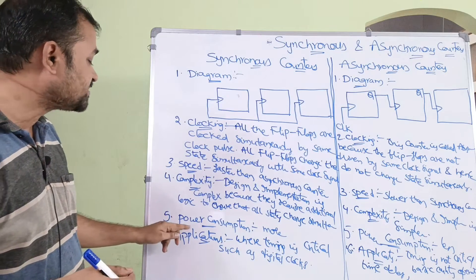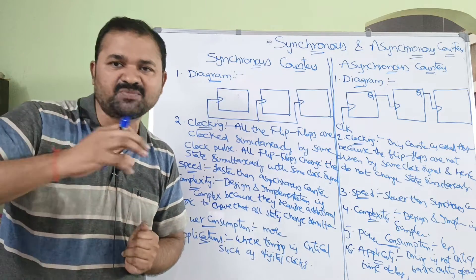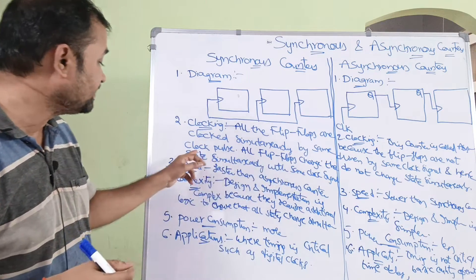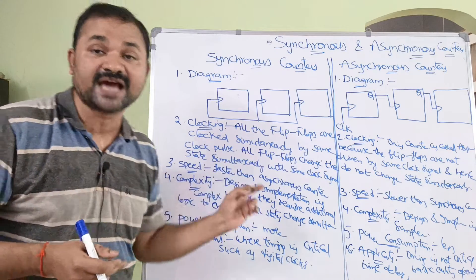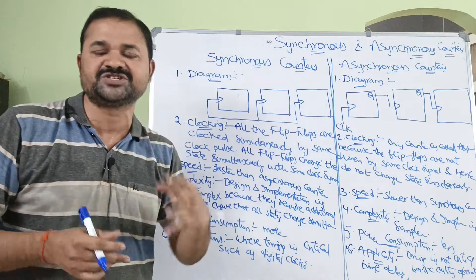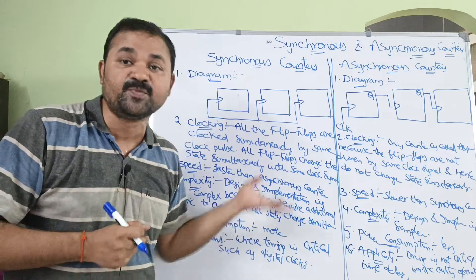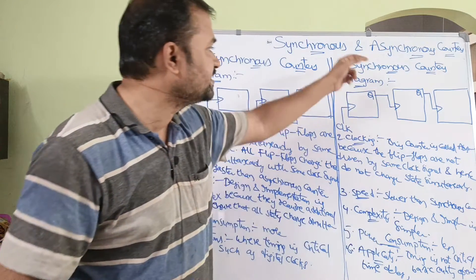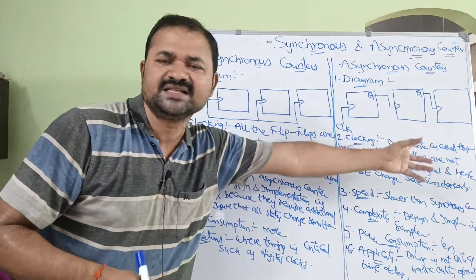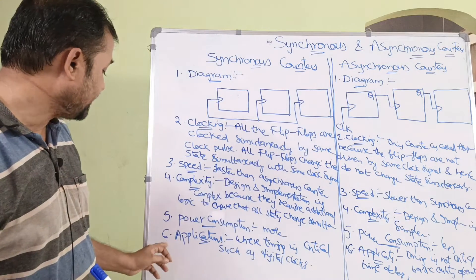The fifth difference is power consumption. Synchronous counters require more power consumption because the same clock pulse is applied to all flip-flops simultaneously, and they must all change state at the same time, requiring more hardware and complex design. Asynchronous counters require less power consumption because delays are acceptable and no extra hardware is needed.